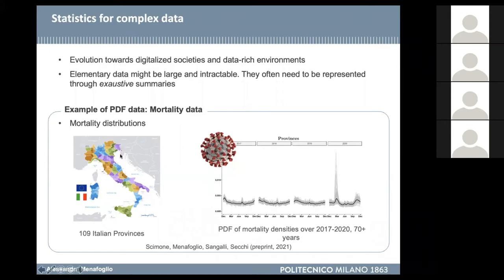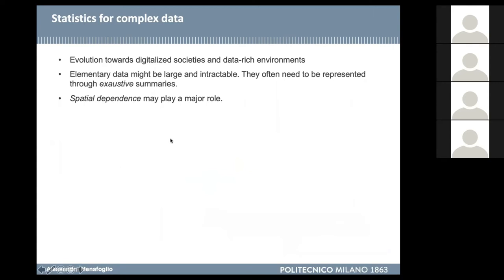What we see here are the mortality distributions in the provinces of Italy along the years from 2017 to 2020. It's clear that we have a dynamic here. What we want to do is to understand which methodologies allow us to study this kind of complex data — and study the data along time, but also along space. Spatial dependence may play a major role in our analysis.